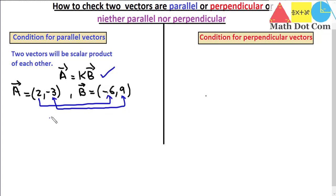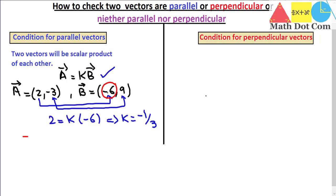If we check the x-components, we can say that 2 equals k times -6, where both are x-components of the two vectors. So k equals -1/3. This means every component of b must be a -1/3 multiple of the corresponding component of a. Now let's verify: if we multiply -6 by -1/3, we get 2. Yes, the x-components check out.